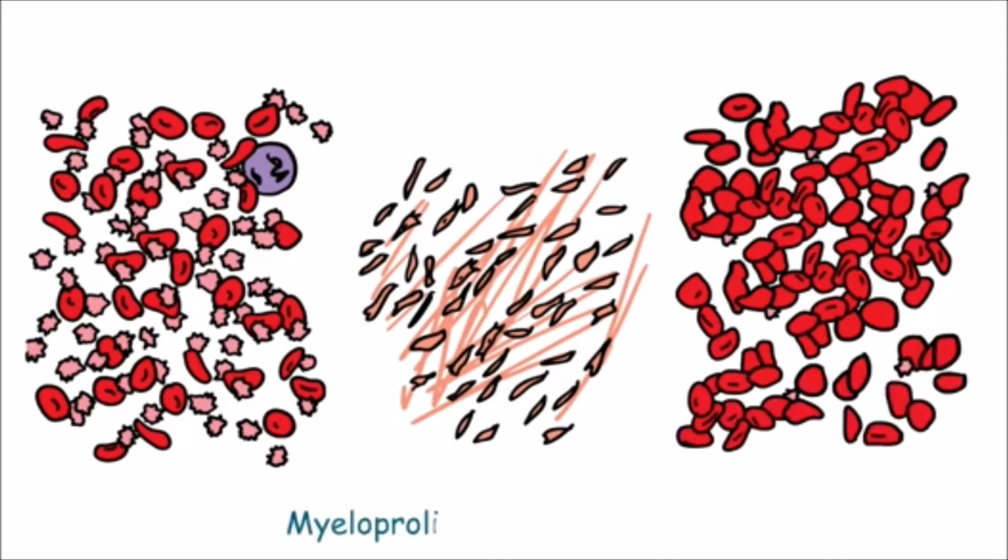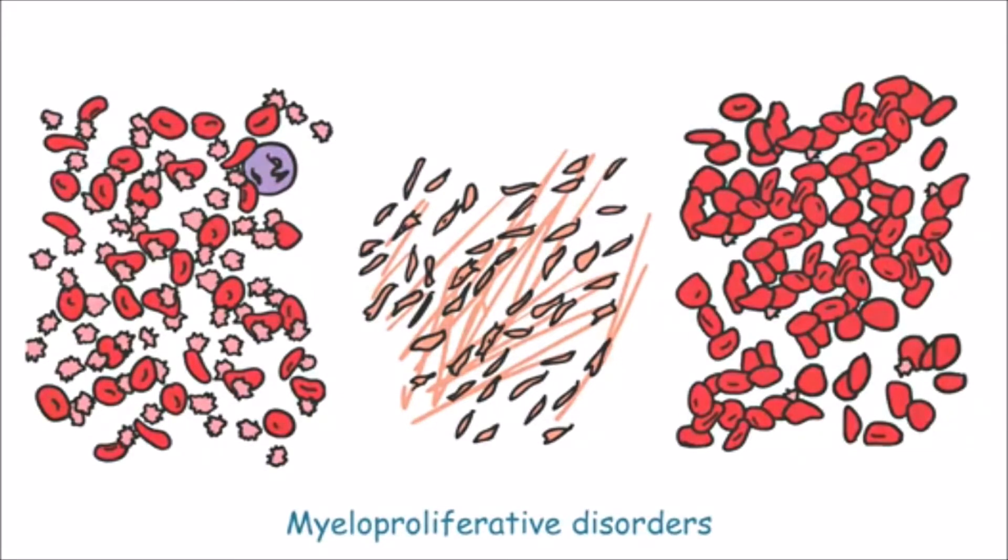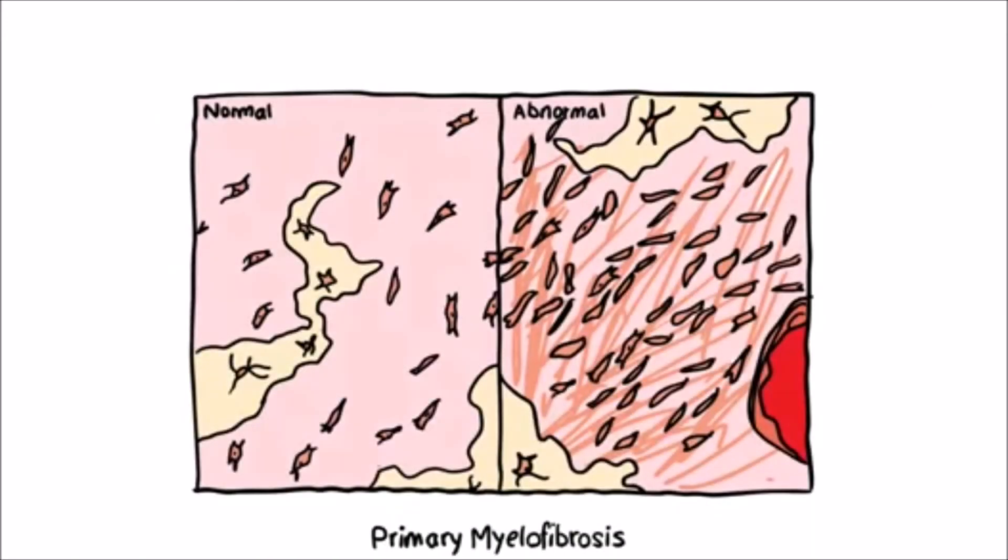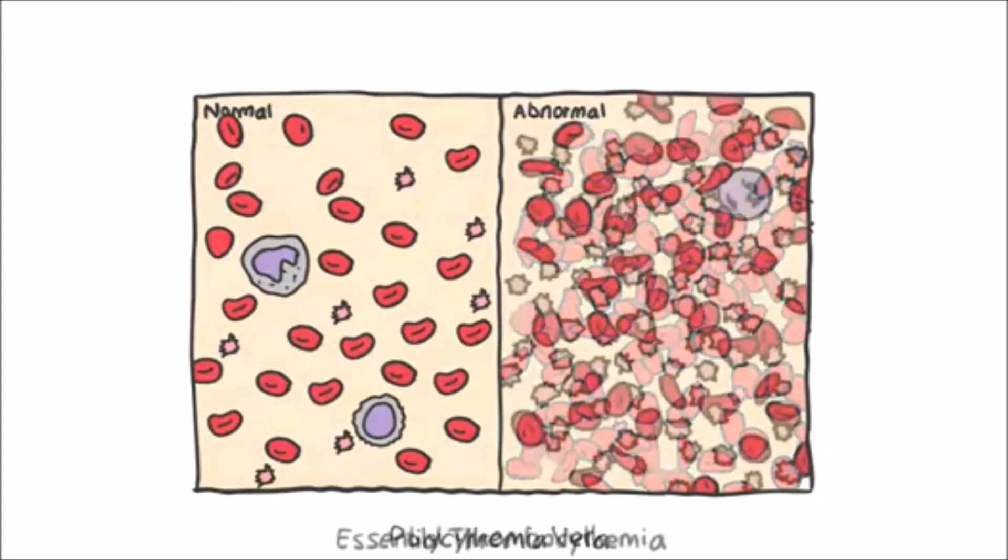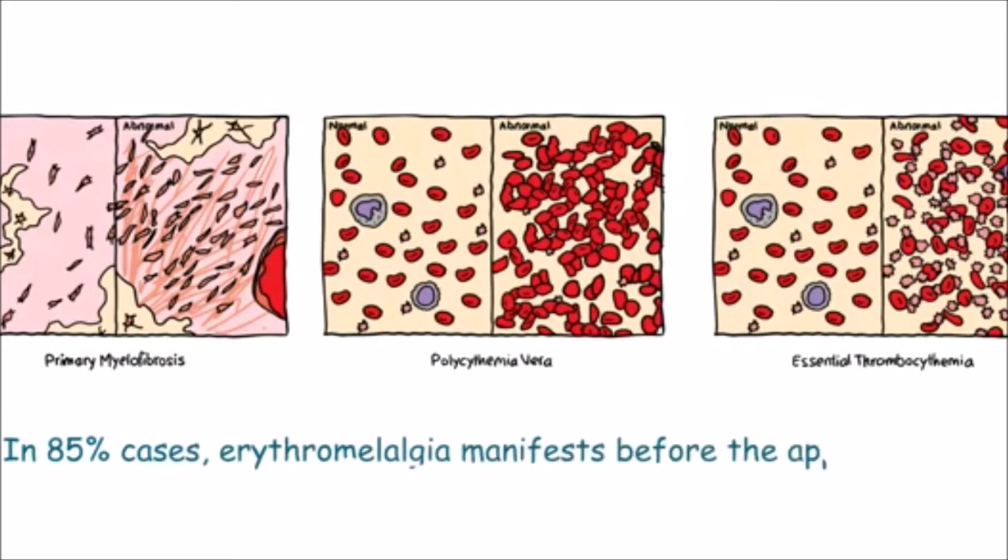In its secondary form, erythromelalgia is associated with myeloproliferative disorders, a group of conditions that cause blood cells to grow abnormally. Some examples of myeloproliferative disorders are myelofibrosis, polycythemia vera, and essential thrombocythemia. In 85% of cases, erythromelalgia manifests before the appearance of myeloproliferative disorder.